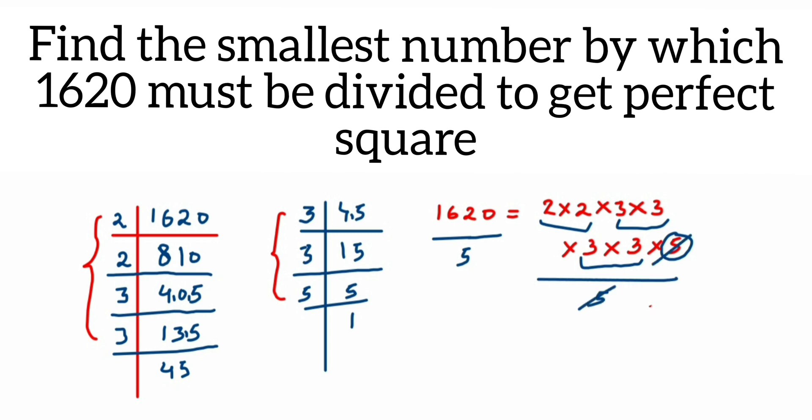I will divide both sides by 5. On the right-hand side it gets cancelled. On the left-hand side, we'll get 1620÷5. 5×3=15, 1 is left, then 5×2=10, 2 is left.